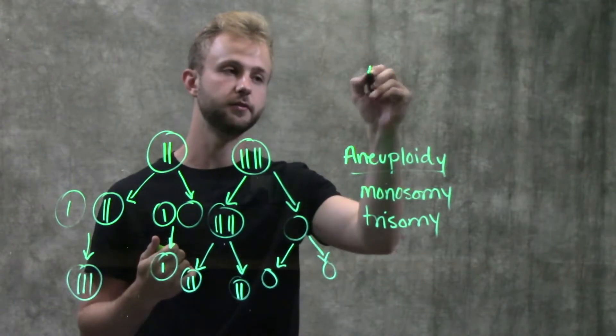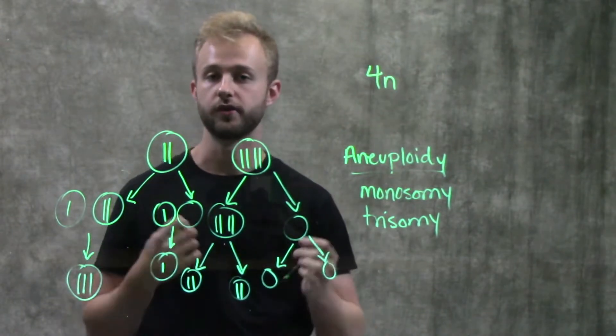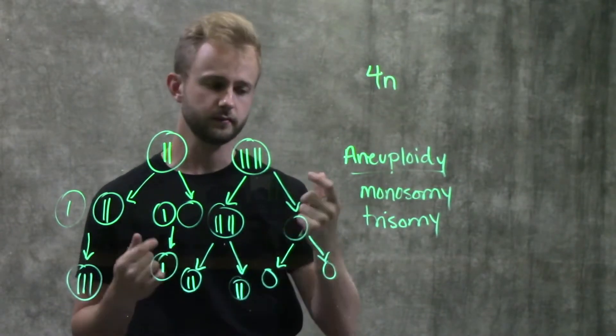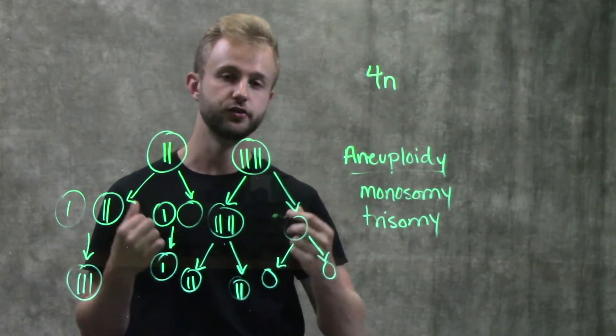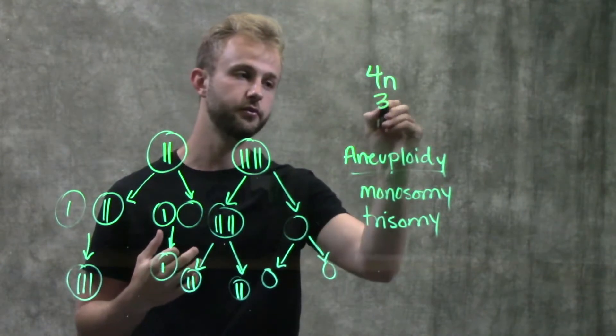Or tetraploidy, for example, would be four N. So they would have four copies of every chromosome. And then you can get into triploidy. So that would be three N. So they would have three copies of every chromosome.